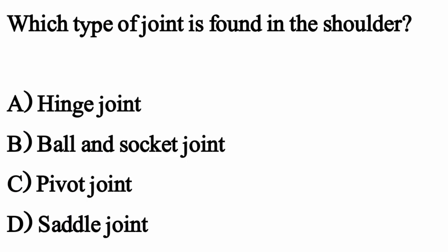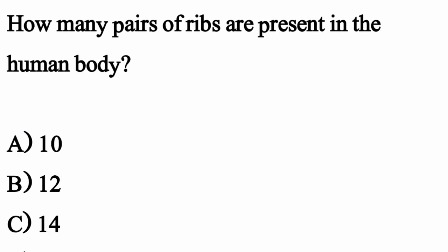Which type of joint is found in the shoulder? The correct option is Option B: Ball and Socket Joint. How many pairs of ribs are present in the human body? The correct option is Option B.